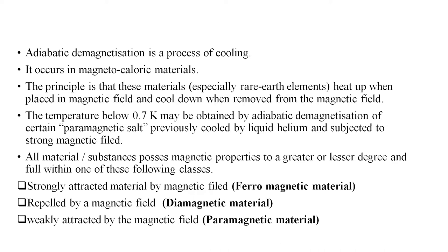Magnetization means in the presence of a magnetic field; demagnetization means in the absence or removal of the magnetic field. During magnetization the material heats up; during demagnetization it cools down. A temperature below 0.7 Kelvin may be obtained for certain paramagnetic salts previously cooled by liquid helium and then subjected to a strong magnetic field. These materials must be pre-cooled by liquid helium before the magnetic field is applied to achieve about 0.7 Kelvin.